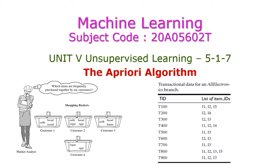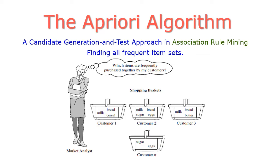In this machine learning class we will see the most important Apriori algorithm from the fifth unit on unsupervised learning. We will solve one problem to easily understand the Apriori algorithm. In today's data mining and warehousing class, we are going to learn the Apriori algorithm, a candidate generation and testing approach in association rule mining, used to find all frequent item sets. Here we have shopping baskets of customers — customer one, customer two, customer three, up to customer n — and we need to find which items are frequently purchased together using the Apriori algorithm.